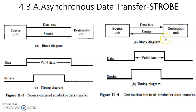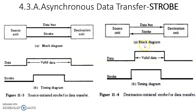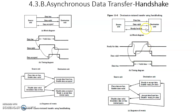Strobe-controlled data transfer has a serious problem: the destination unit is not communicating back to the source unit whether it has received the data or not. The acknowledgement of received data is not communicated back to the source unit. This is the biggest drawback of strobe-controlled data transfer, which is why we are going to look at handshake-controlled data transfer.